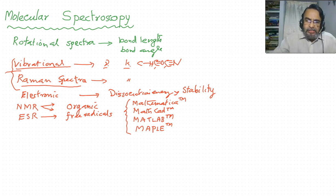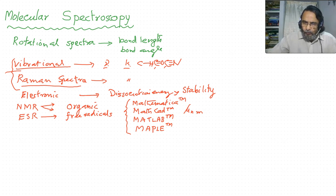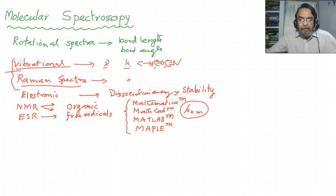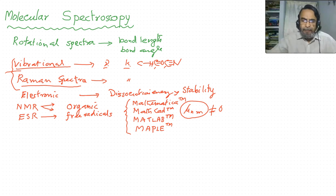What is a selection rule? Selection rules are rules governing the non-vanishing of mu-nm, where m is the initial state and n is the final state of a transition. This is called the transition dipole moment. Non-vanishing means not equal to zero. So selection rules are rules governing the non-vanishing of the transition dipole moment, mu-nm. We will study in detail what this mu-nm is in later sessions.